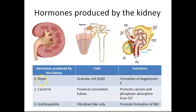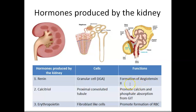The hormones produced by the kidney — there are three major hormones. The first hormone is renin. Renin is produced from the juxtaglomerular apparatus within the kidney. More specifically, renin is produced by the granular cells within the juxtaglomerular apparatus. The major function of renin is regulation of blood pressure through formation of angiotensin 2.